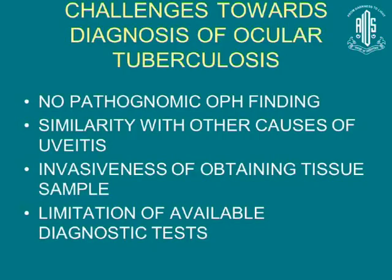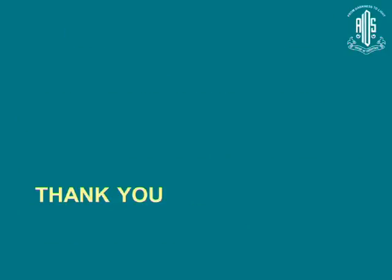To summarize: there are no pathognomonic ophthalmic findings toward diagnosis of ocular tuberculosis, there is similarity with other forms of uveitis, invasiveness of obtaining tissue samples, and limitations of available diagnostic tests. Thank you.